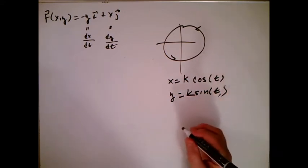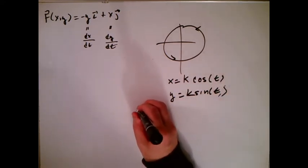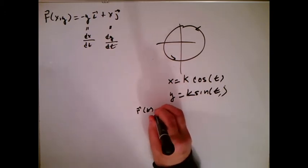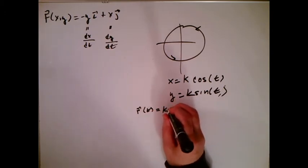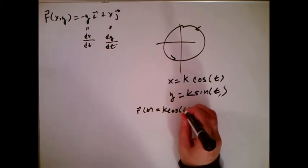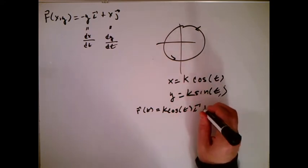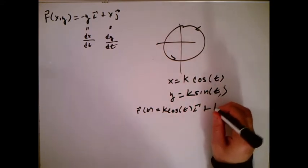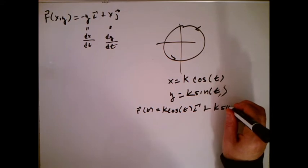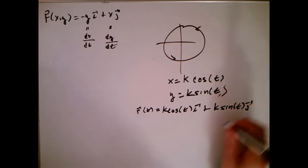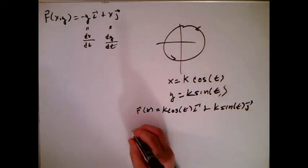Remember how we find the velocity, right? We write down r of t, and that's just x times i plus y times j like that. And then we find the velocity by taking the derivative.